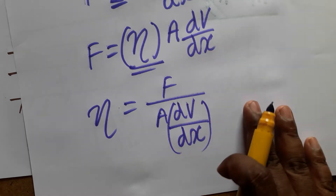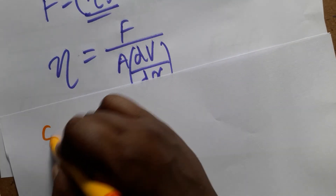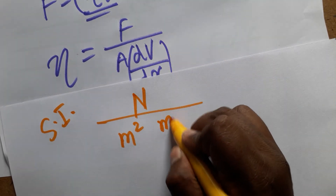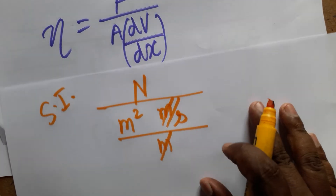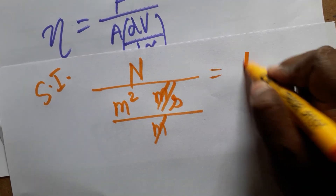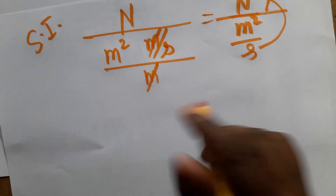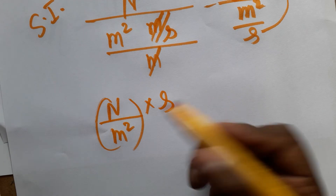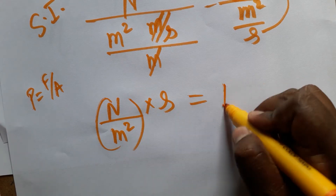Now we find the unit in the MKS (SI) system. Force in SI is Newton, area is meter squared, velocity is meter per second, and displacement is meter — so meter cancels, giving Newton per meter squared per second. Moving the denominator up: Newton per meter squared times second. Since Newton per meter squared is pressure, this equals Pascal·second.